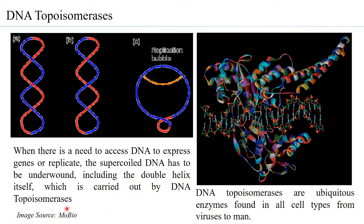DNA topoisomerases have a structure that allows them to bind to DNA, and because they can bind to DNA, they are able to carry out the function of relaxing an overwound or an underwound DNA. These enzymes are ubiquitous — they are present in almost all different organisms across different kingdoms. You will find topoisomerases in viruses, in E. coli, in yeast, and in human beings as well.